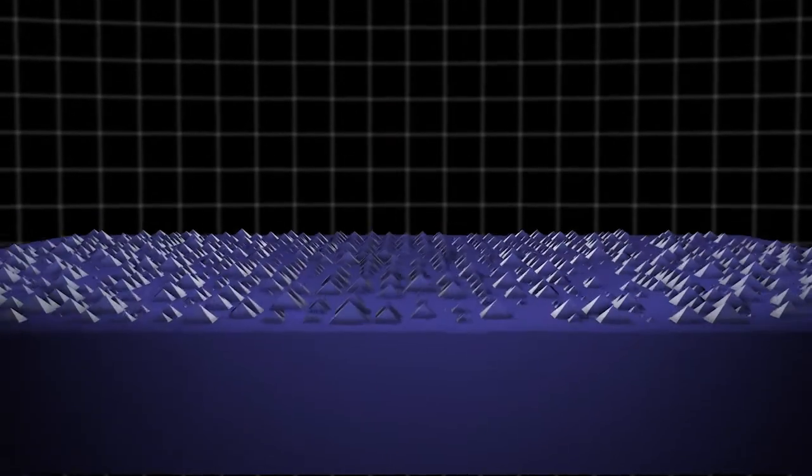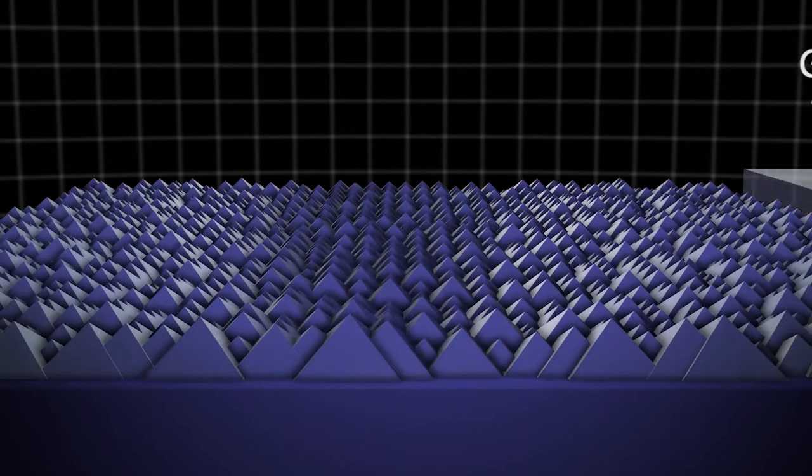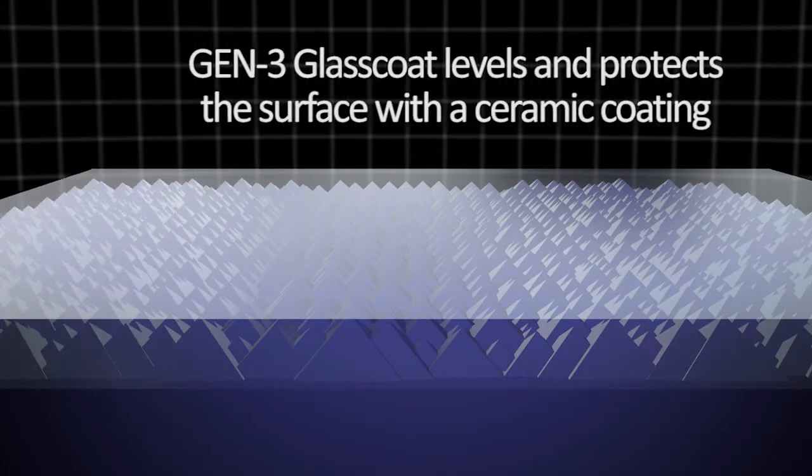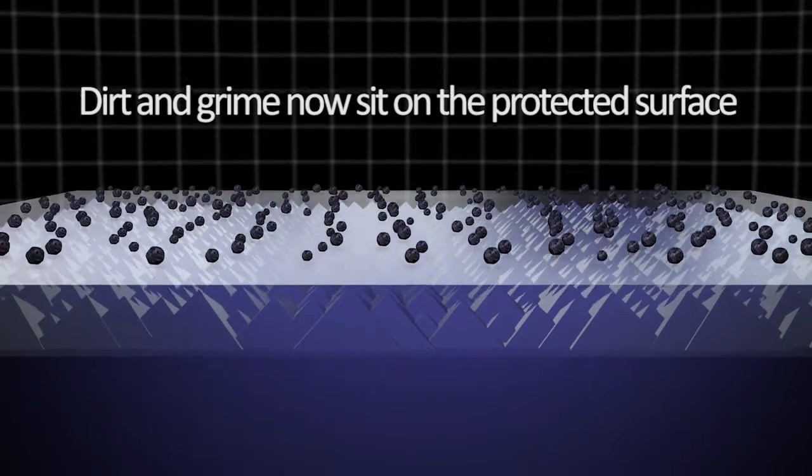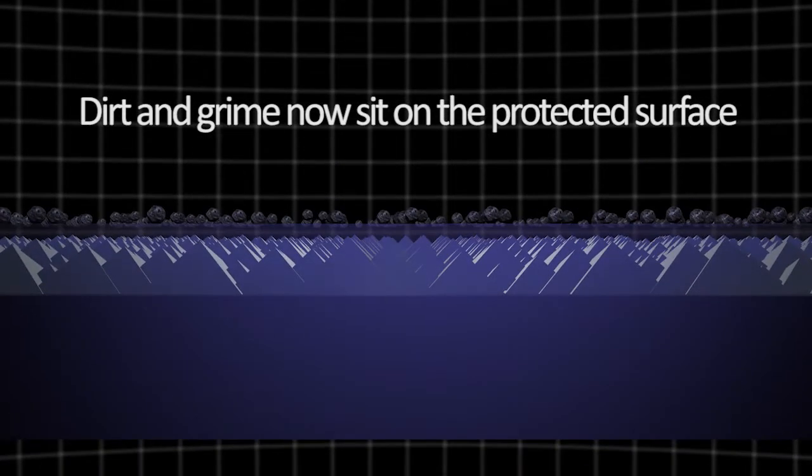Now let's see the protected paint surface. Gen 3 Glass Coat applied to the paint forms a smooth and hardened ceramic finish. Dirt and grime now sit on the protected surface, unable to bite into the paint.